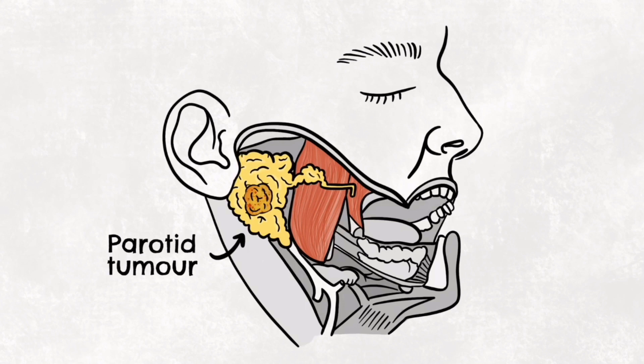Tumors of the submandibular and sublingual glands are less common, but more likely to be malignant or cancerous. Treatment usually involves surgical excision of the tumor and the parotid gland, known as a parotidectomy. During this procedure, it is important to identify and preserve the facial nerve and preserve as many of its branches as possible. Damage to the facial nerve or its branches will cause paralysis of muscles of facial expression, causing the affected area to sag. This can be very distressing for the patient, and careful, thorough consenting of this risk is essential preoperatively.